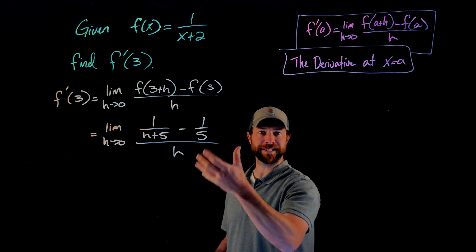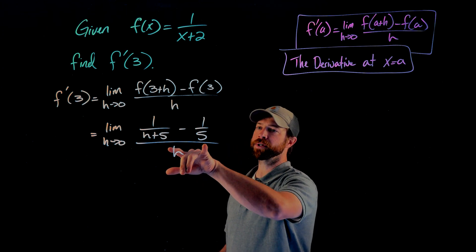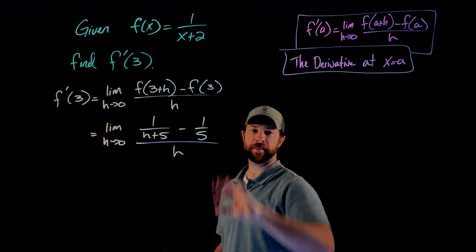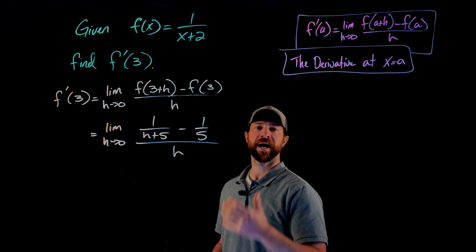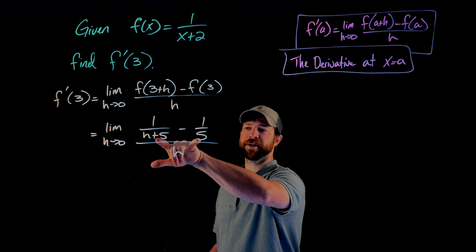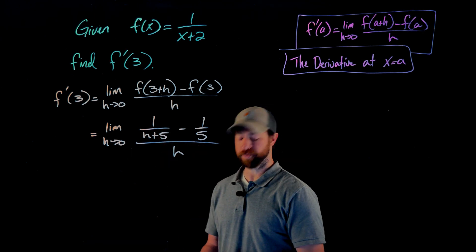The first thing I'm going to do, this is a complex fraction. What I'm going to do is multiply the numerator and denominator of the larger complex fraction by the least common denominator of these two fractions up here in the numerator.